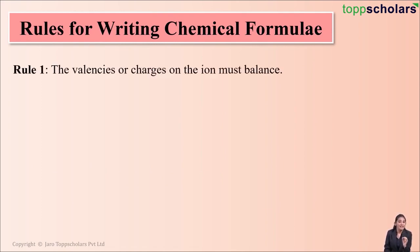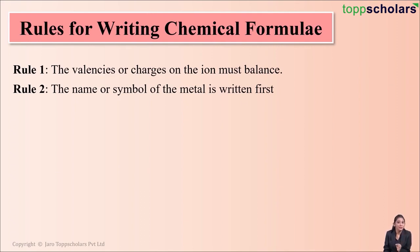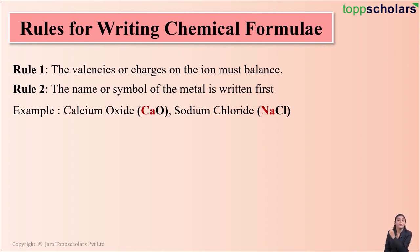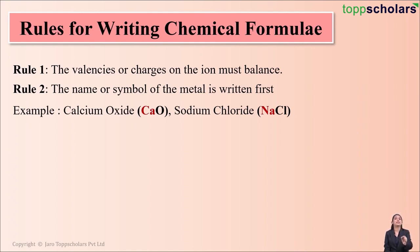The first rule is that the valencies or charges on the ion must be balanced. Rule number 2 says that the name or symbol of the metal should be written first. For example, the formula for calcium oxide is CaO — here the symbol of the metal calcium (Ca) is written first. Similarly, for sodium chloride the formula is NaCl, where Na stands for sodium, the metal. So always remember the symbol of the metal should be written first.